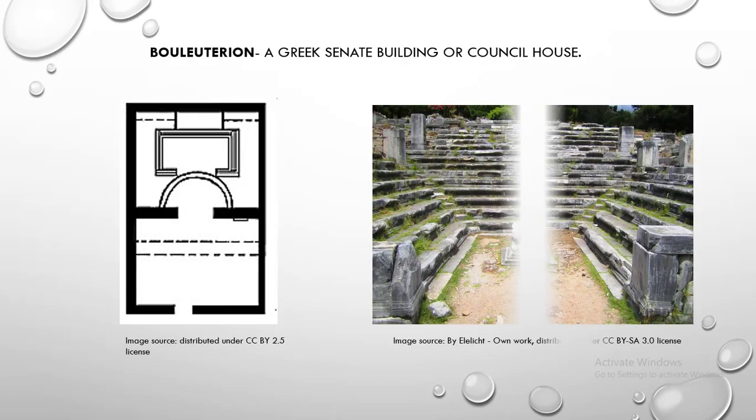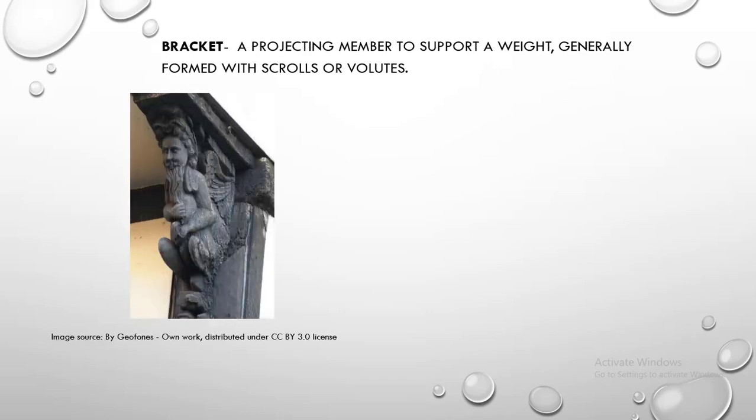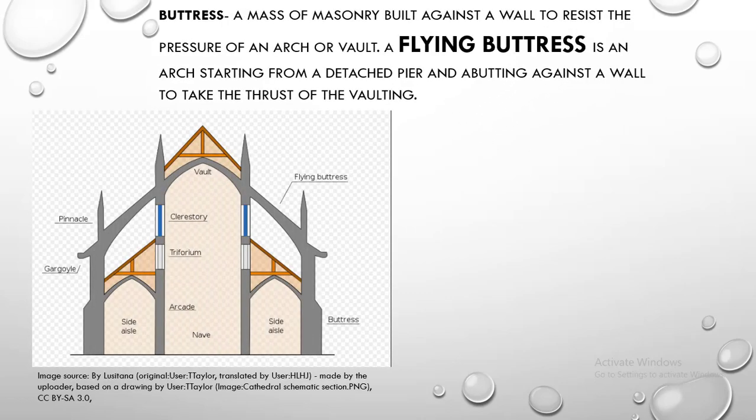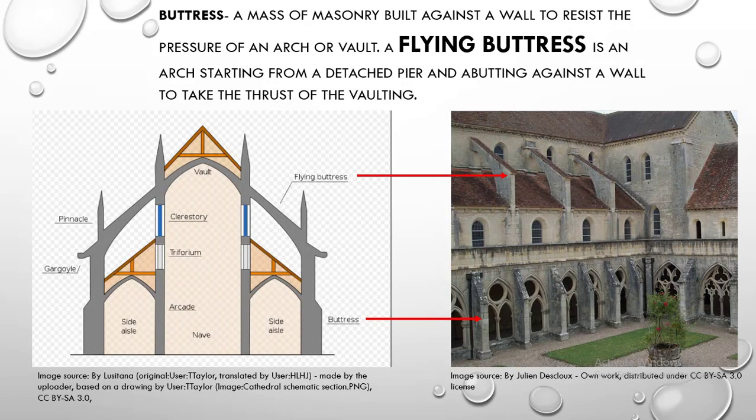Bouleuterion. Bouleuterion is a Greek senate building or council house. Bracket. Bracket is a projecting member to support a weight, generally formed with scrolls or volutes. Buttress. Buttress is a mass of masonry built against a wall to resist the pressure of an arch or vault. A flying buttress is an arch starting from a detached pier and abutting against a wall to take the thrust of the vaulting.